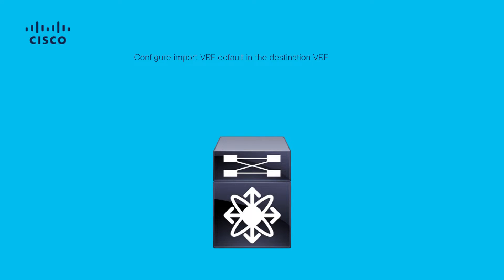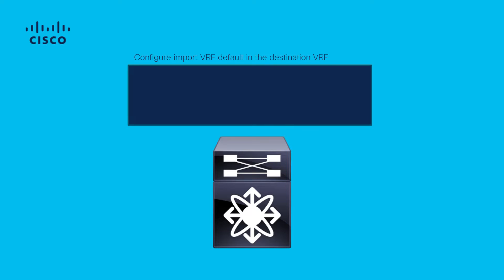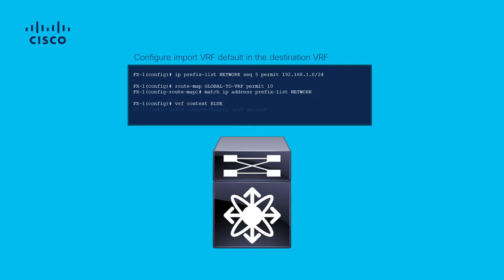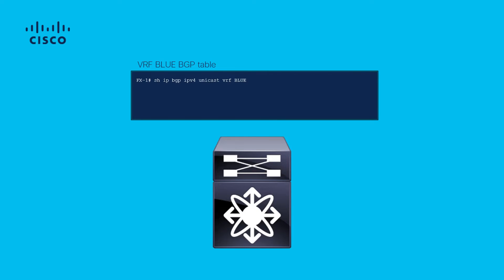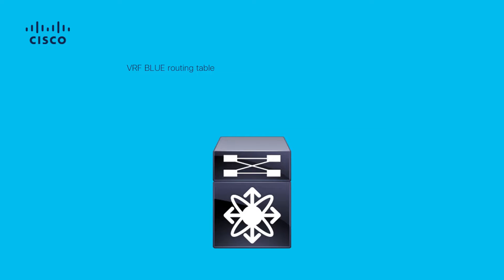The import VRF default command is configured in the destination VRF. The command requires a route-map as a parameter in order to explicitly define the routes to be imported in the destination VRF, which in this case is the VRF named blue. You can confirm in the destination VRF that the routes are now seen via BGP. Verify on the routing table of VRF blue.